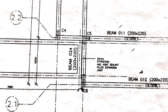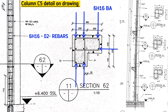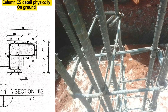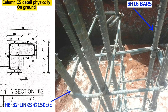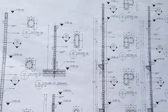For column C5, each section is in a specific shape with six H16 code 2 rebars, tied with H8 code 32 links at a spacing of 150 millimeters center to center. Physically, it will look like six H16 steel bars with H8 links at 150 millimeter center to center spacing. That is the end of this video about how to read structural drawings for columns.